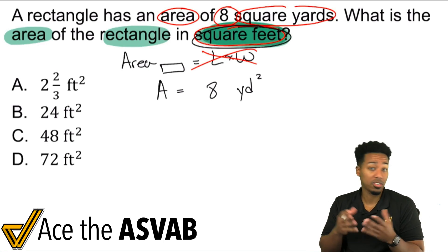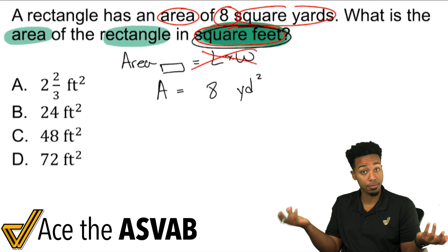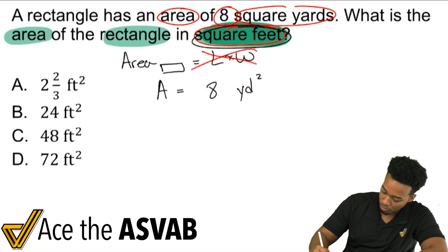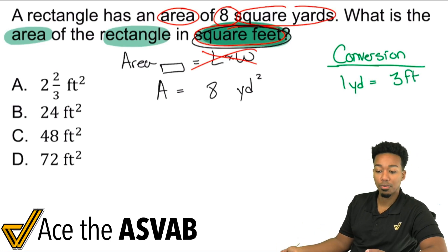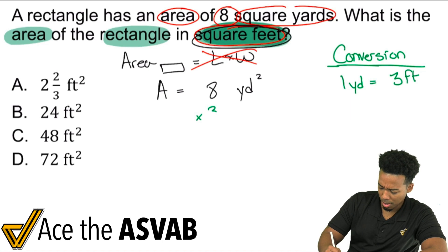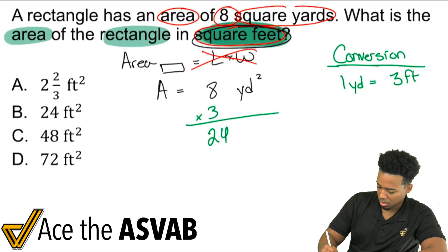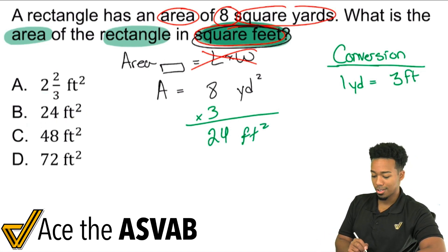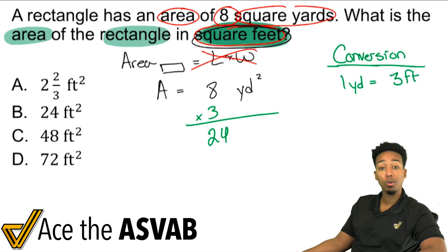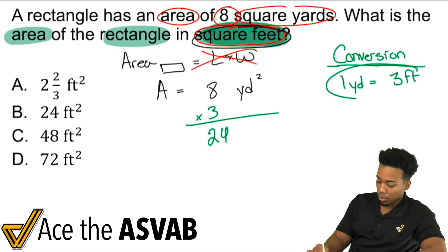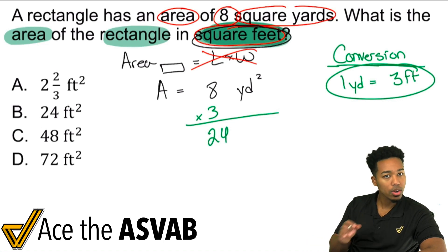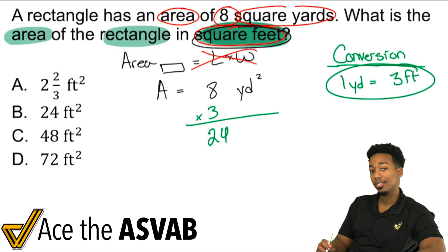One way you might think about this: you know that one yard equals three feet, so you write that as a conversion. And a lot of us may think — okay, just multiply by three, and we get 24 square feet. Answer's B. No — that's not what we do. That's how you turn yards to feet, not square yards to square feet. That's not it.